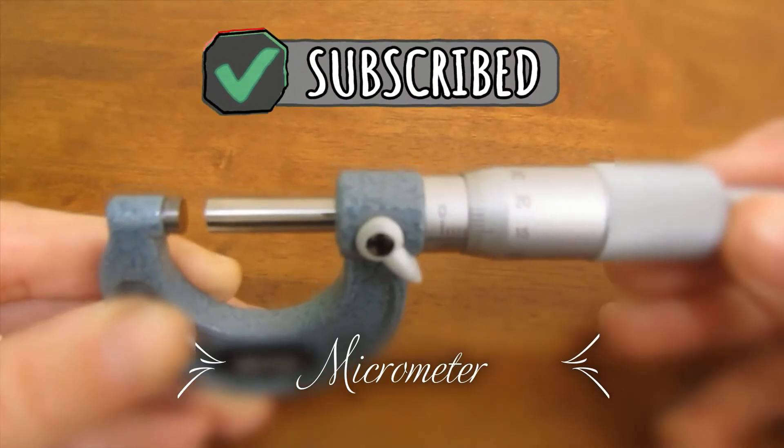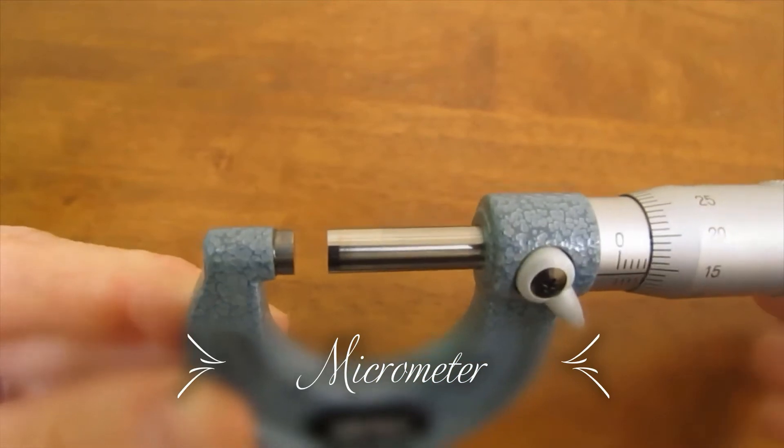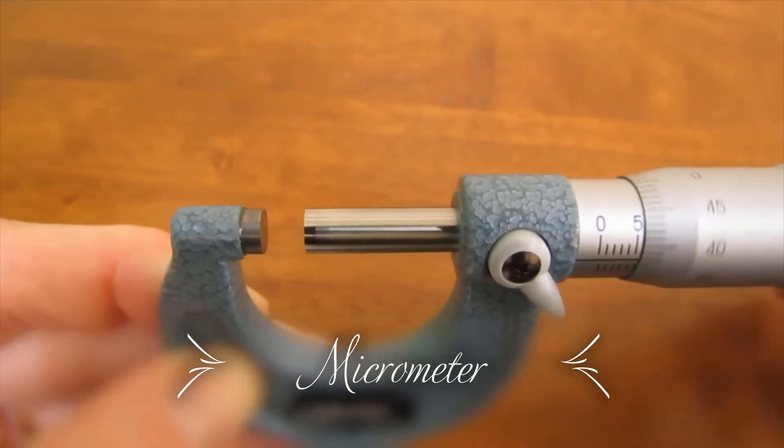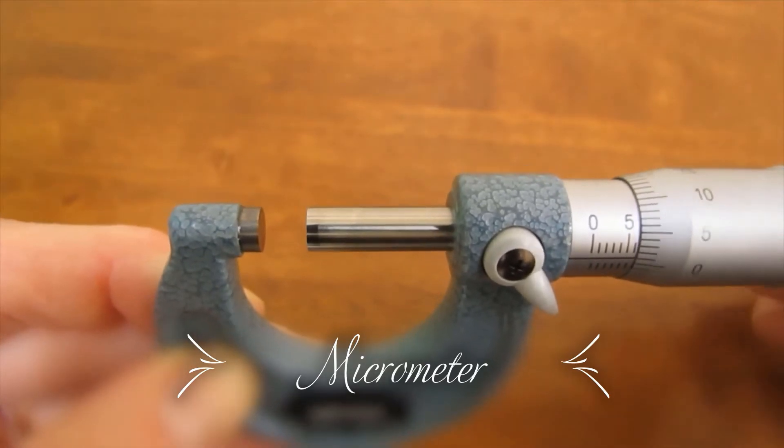If I start to turn the thimble, you can see that the anvil and spindle are opening up. The spindle moves, but the anvil does not.